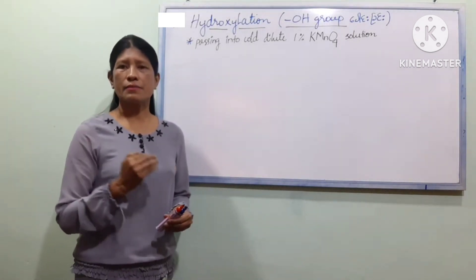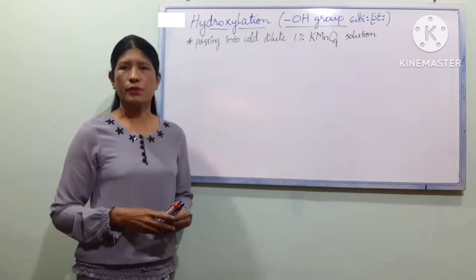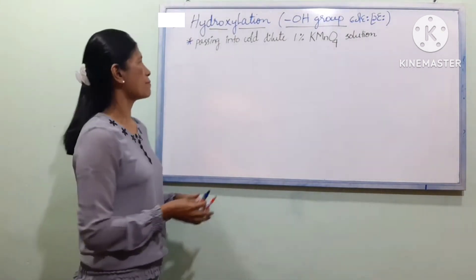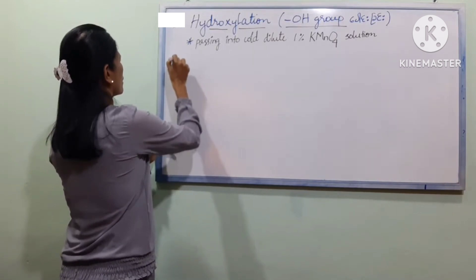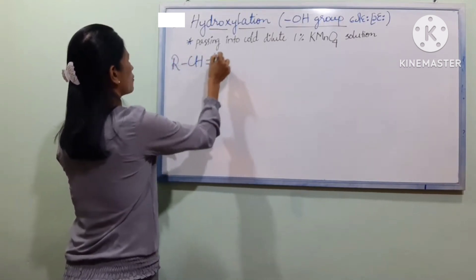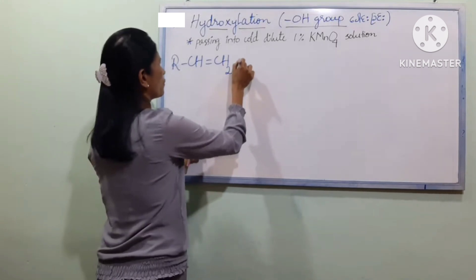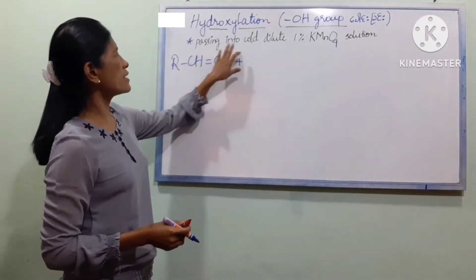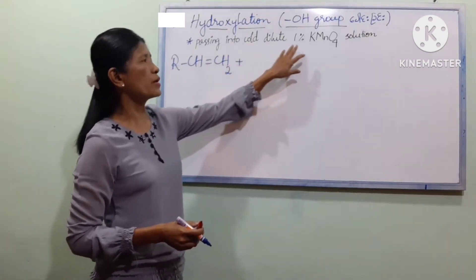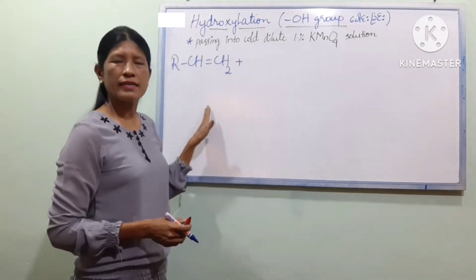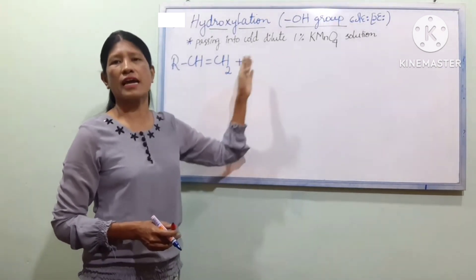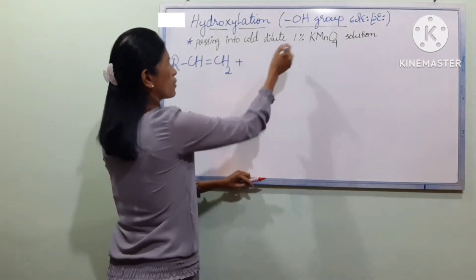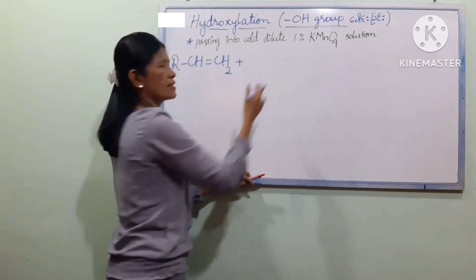Hydroxylation involves alkenes reacting with OH groups. In this lesson, we are going to talk about the alkene reaction equation. The alkene reacts with cold dilute 1% KMnO4 solution. KMnO4 is 1% — this is the same as dilute.